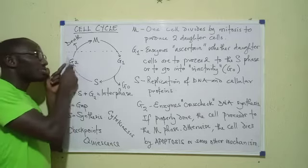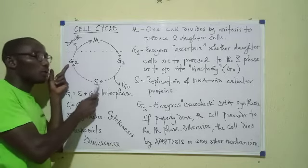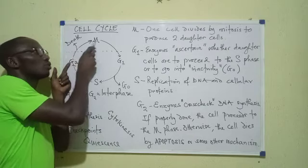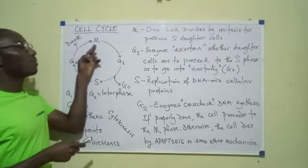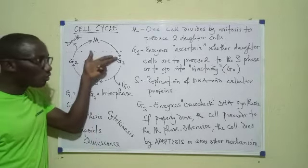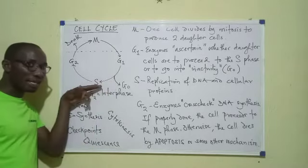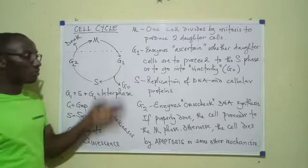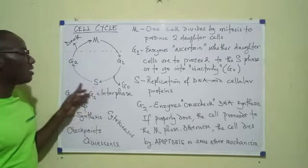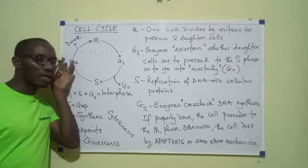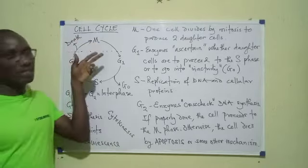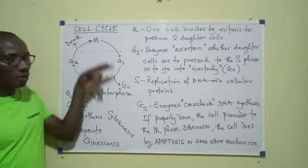In the case where it is ascertained at G2 that the DNA was properly replicated, the cell can move on to mitosis and cytokinesis. By the time that cell divides, it produces two daughter cells that will now move on to G1 as well for their fate to be decided. If they go into quiescence, they stop. If they are to continue dividing, they will replicate their DNA, move on to G2 to check whether that DNA is properly replicated, and then divide. That is how the cell cycle continues — one cell continuously producing daughter cells.